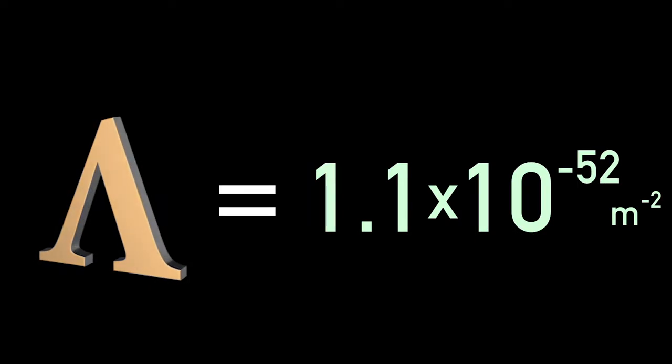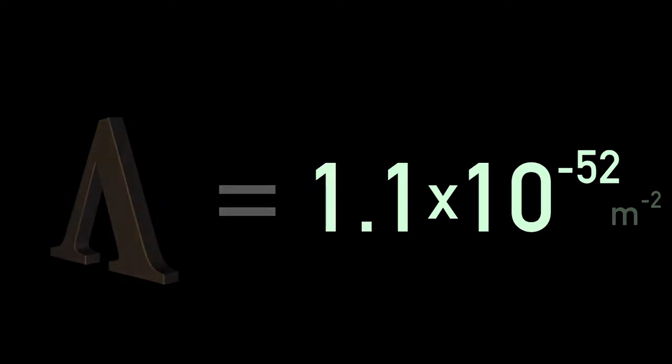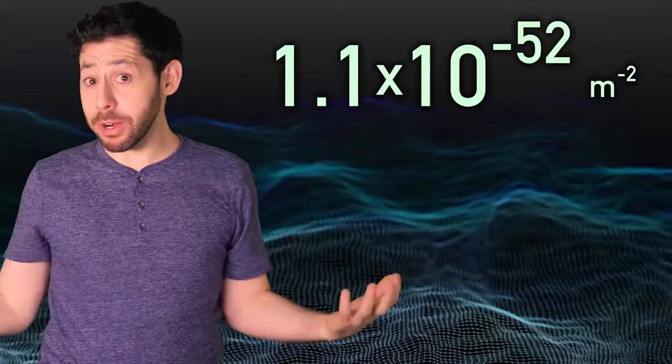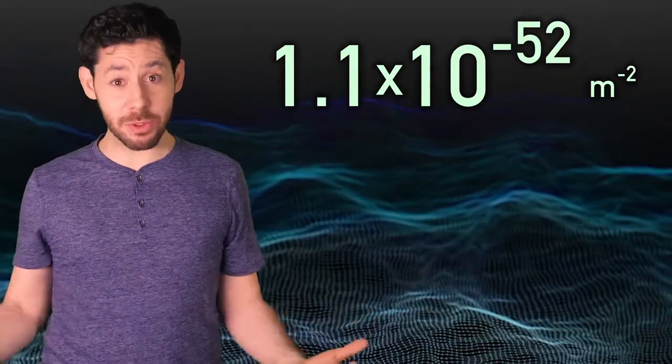Now, here's the baffling thing. In 1998, astronomers discovered that lambda isn't 0. It's actually 1.1 times 10 to the minus 52. So, why that number? It seems pretty random. Even to physicists it seems random.